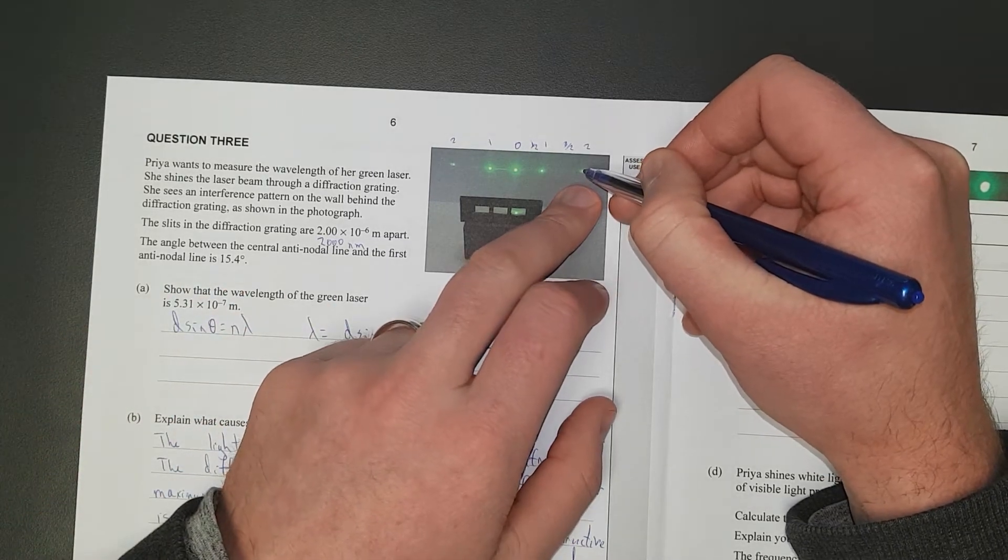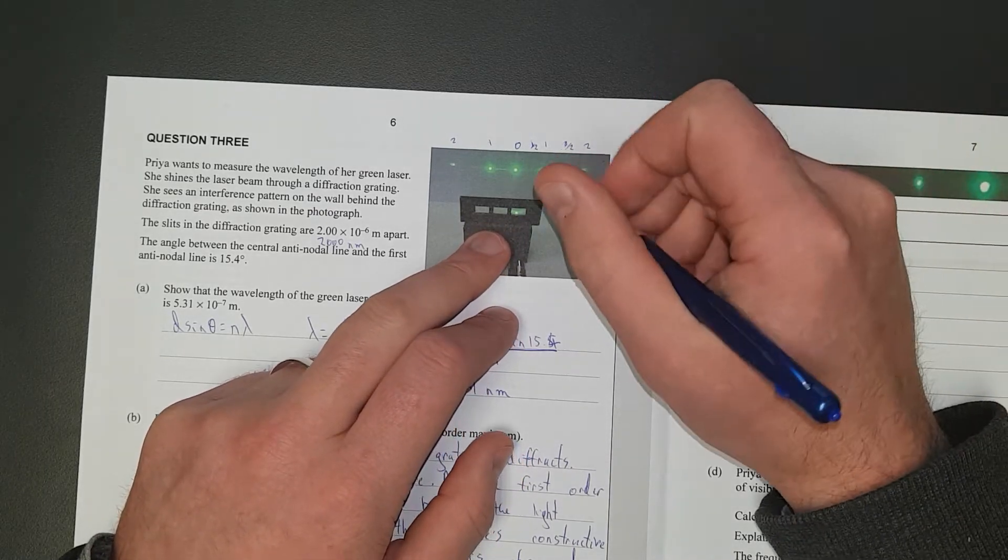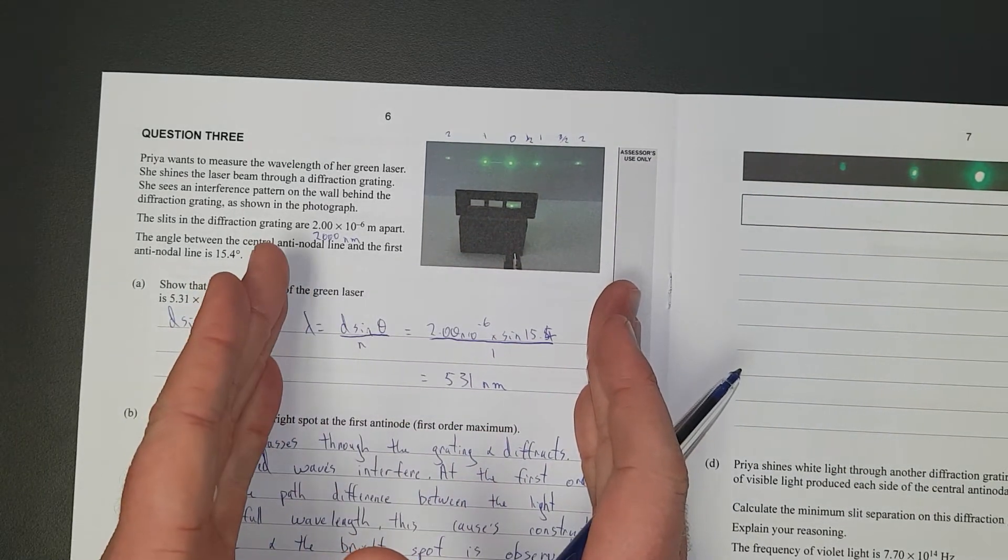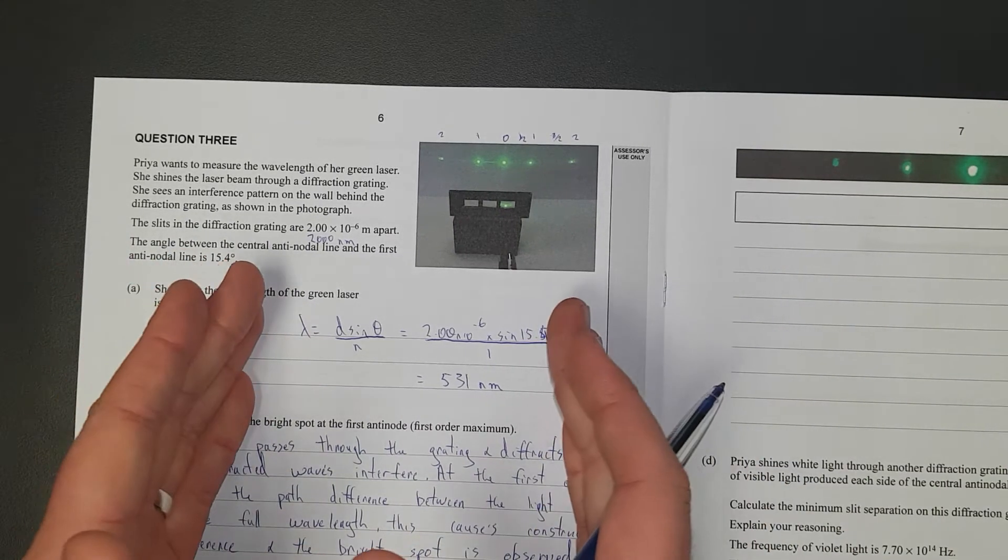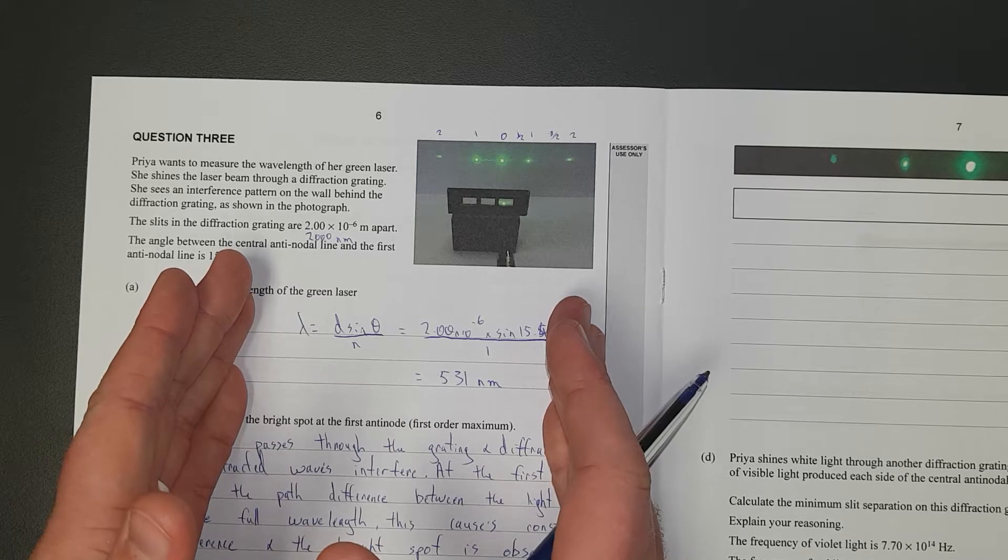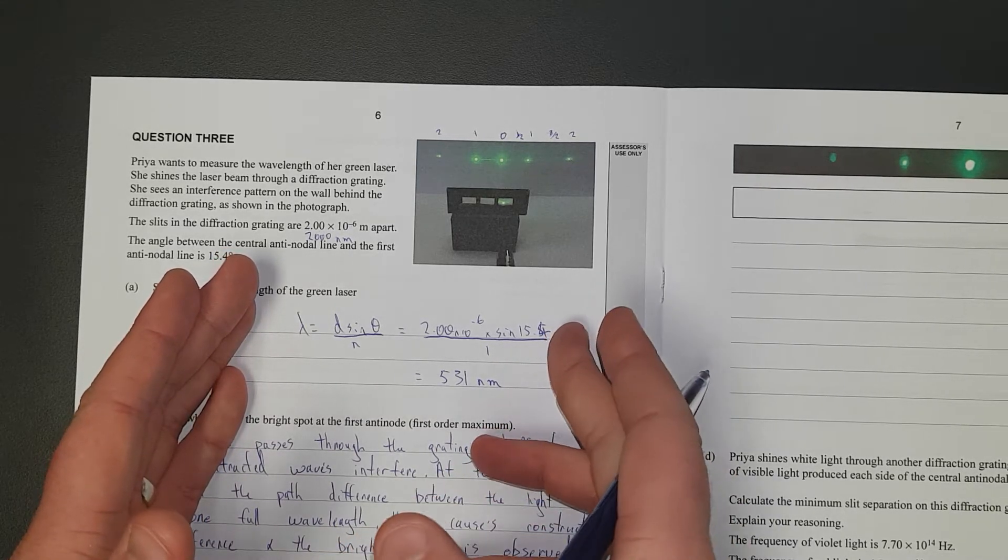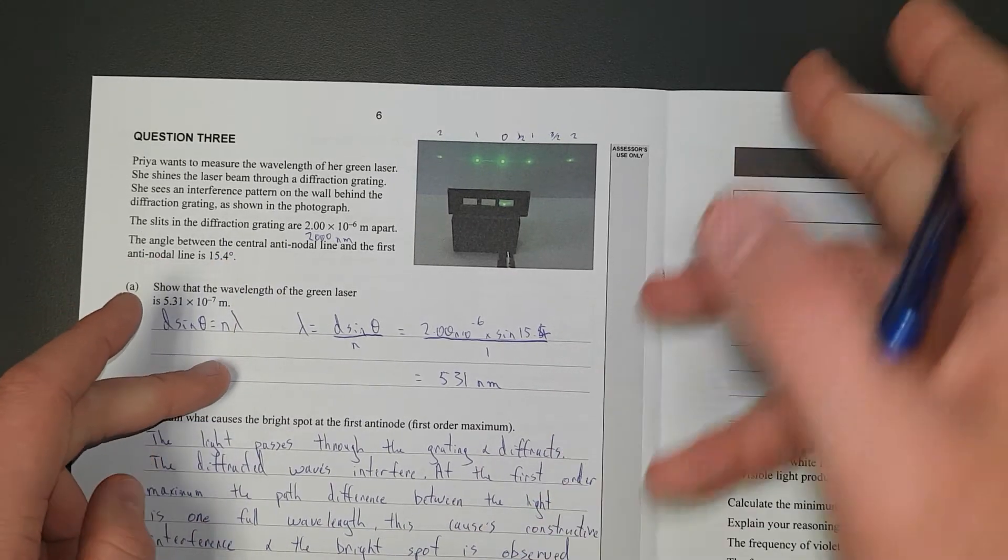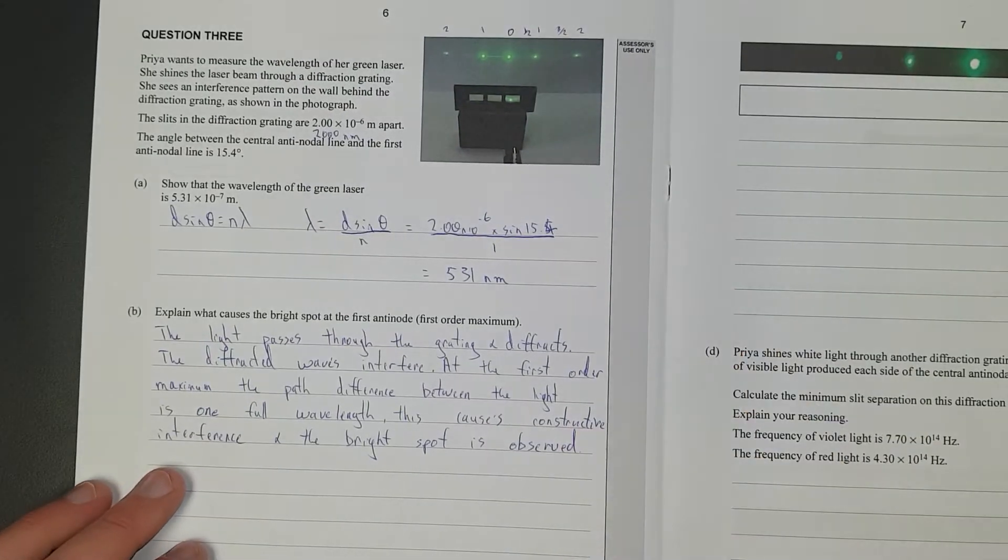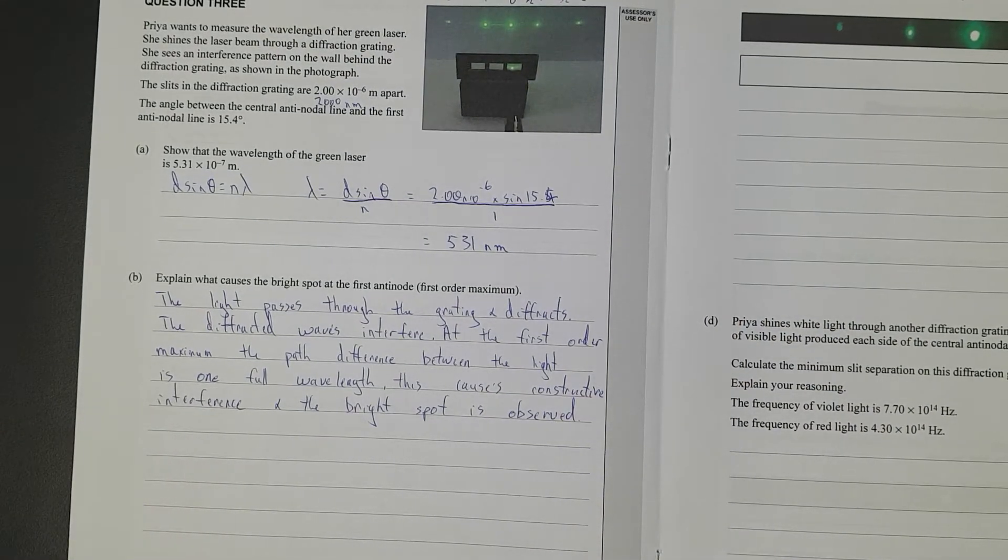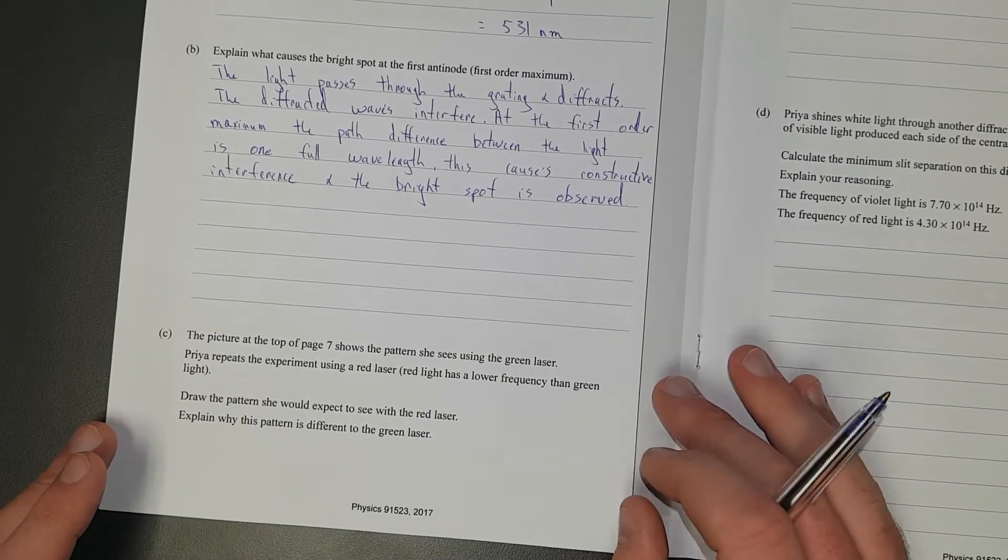For this spot out here, that's a path difference of two whole wavelengths between one side of the slit and the other. You can think of this as a double slit. With two holes, if it's two wavelengths, you're on to the second order maximum. Three wavelengths, third order maximum, four wavelengths, and so on and so forth until you get to 90 degrees.